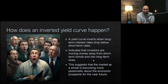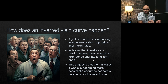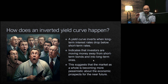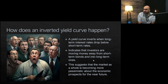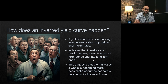Why would they be moving money from short-term bonds into long-term bonds? It's because they expect the economy to enter into a recession, and so the Fed would actually have to reduce short-term rates. What they're really trying to do is circumvent that by moving out the maturity profile for their short-term debt instruments so that they can over the long term capture higher yield. It's effectively suggesting that the market as a whole is becoming more pessimistic about economic prospects in the near future.